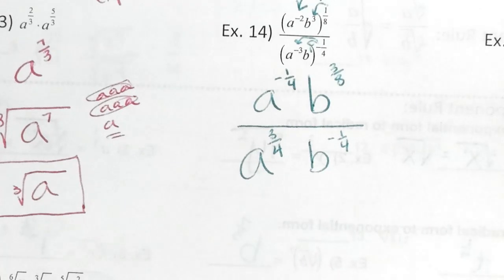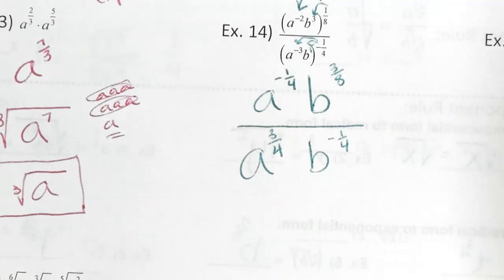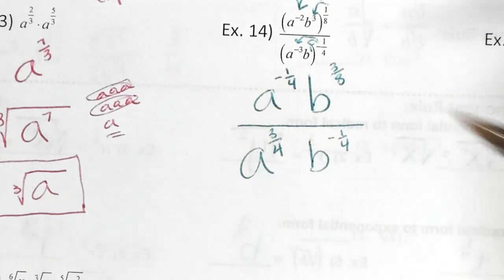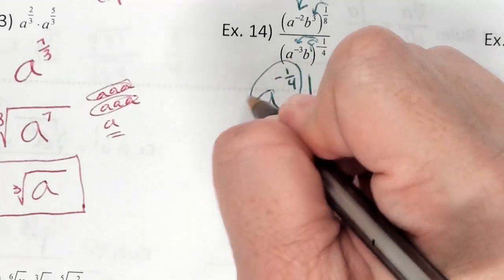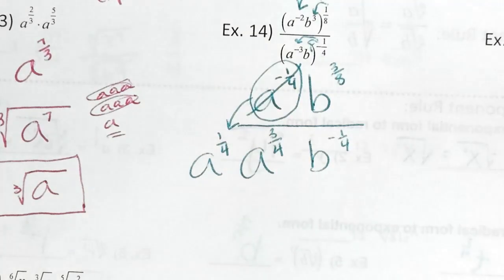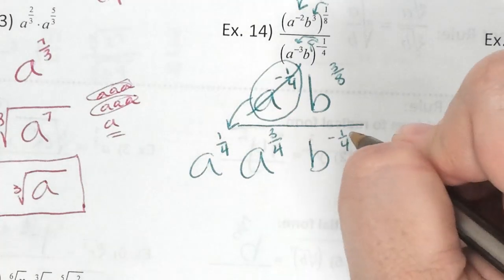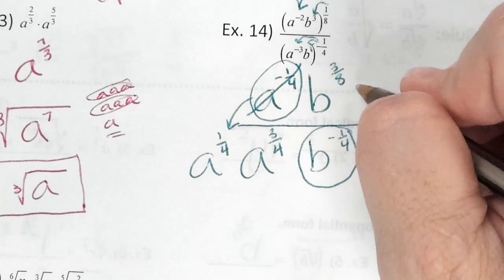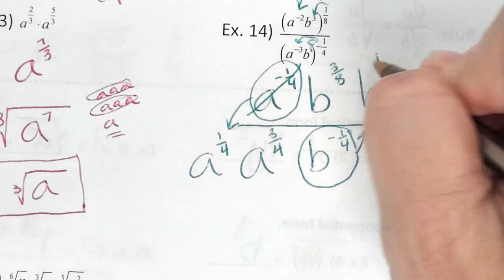On the bottom, this is a negative 1 fourth — the negative and the fraction bar kind of blend in, but it is a negative. So what's negative 1 fourth times negative 3? Two negatives make a positive, and that gives you 3 fourths. b doesn't have an exponent, so it's technically a 1 — negative 1 fourth times 1 is negative 1 fourth. Now, we could go straight into the division rule and subtract, or move our negatives and add. When we have a negative exponent on top, we move it to the bottom and it becomes positive 1 fourth.